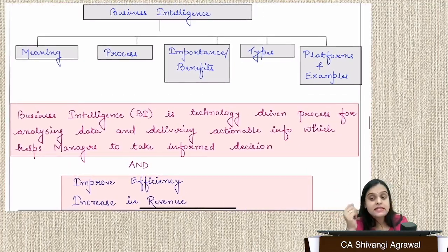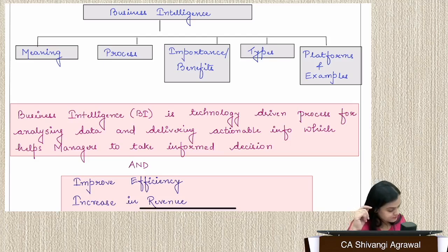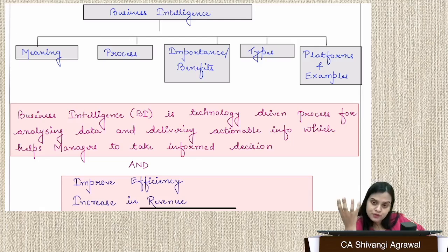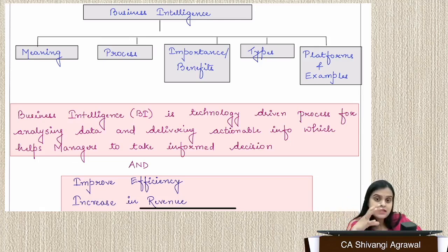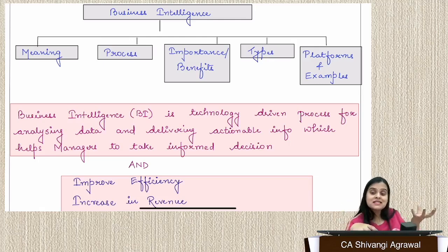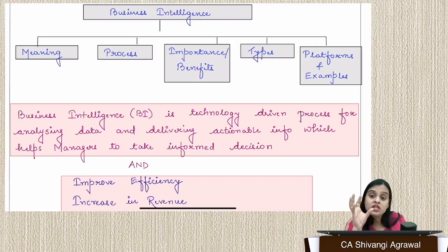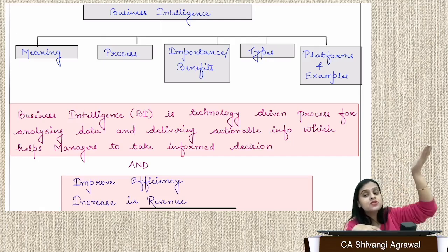Moving to business intelligence: we have a lot of raw data that cannot be used directly for decision making. An organization may have 1 lakh sales records, but just having that data doesn't help. If we classify and analyze the data to extract useful information, that helps. Business intelligence is a technology-driven process — not a manual one — that analyzes raw data and converts it into useful information which can be used to make data-driven decisions.